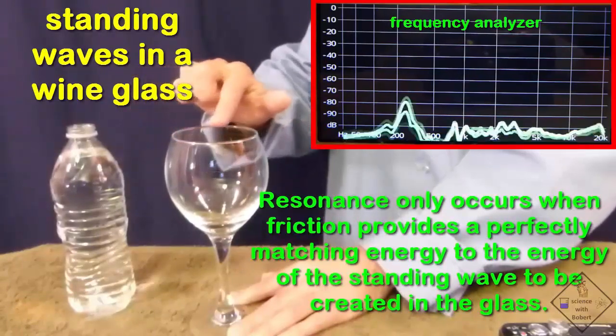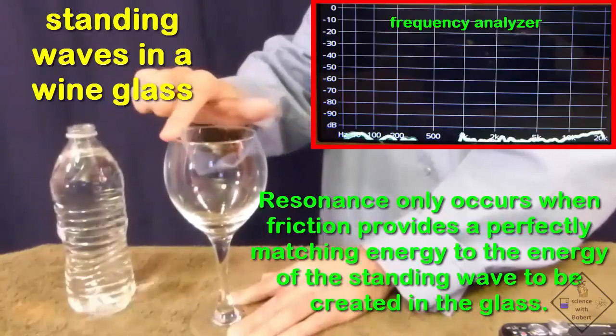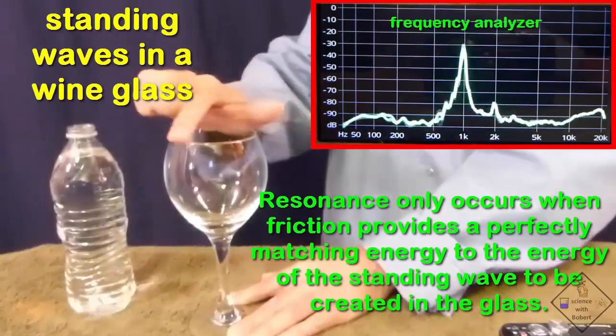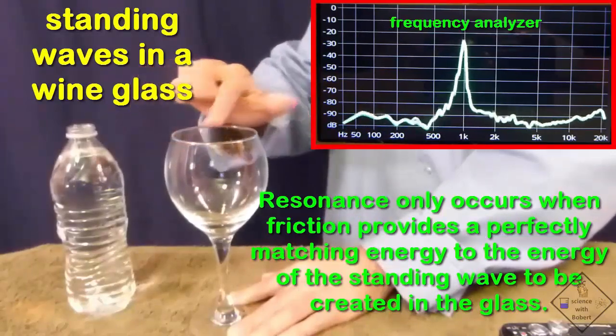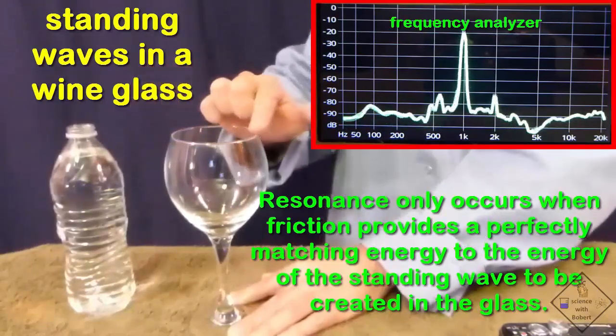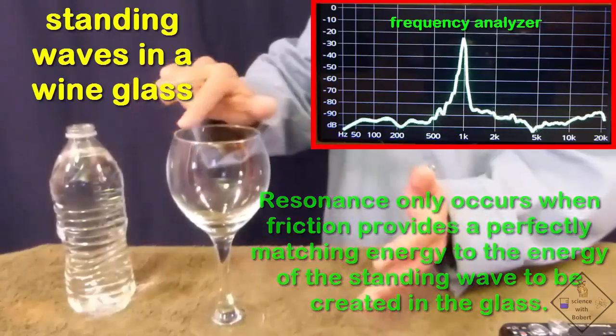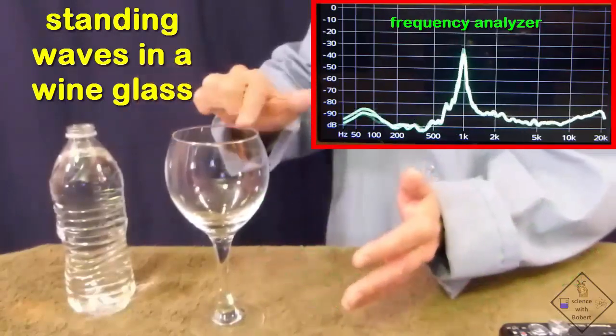The finger must be rubbed along the rim of the glass with just the right amount of moisture, pressure, and speed in order for the correct amount of energy to be transferred to the glass that perfectly matches the energy of the natural resonant frequency of the glass.